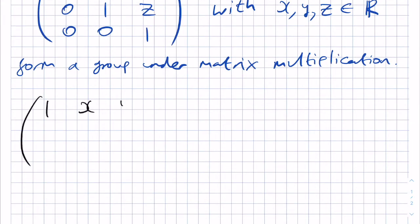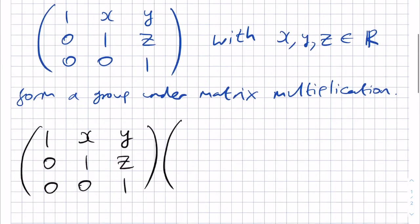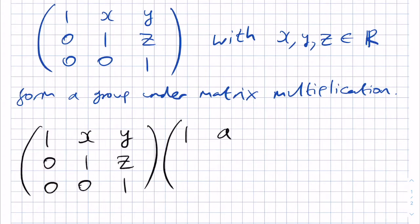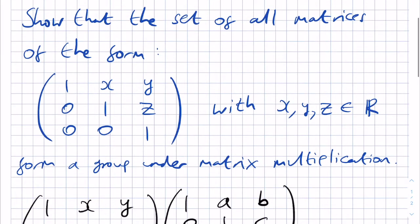So, if we take two such matrices, 1XY01Z001 multiplied by 1AB01C001, then we need to check that we get a matrix that looks like the above form. We have 0, 0, 0, 1, 1, 1, but we have some real numbers here, here, and here.